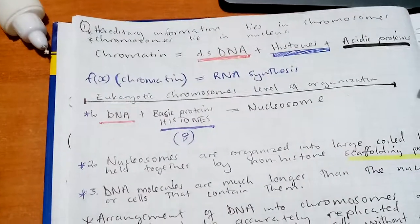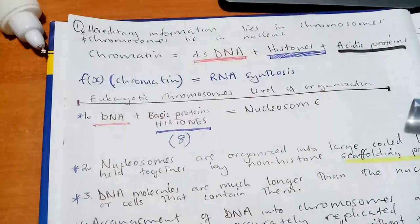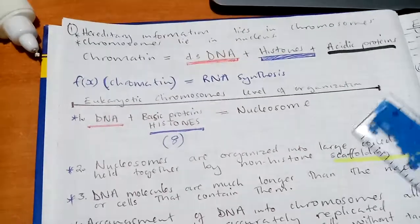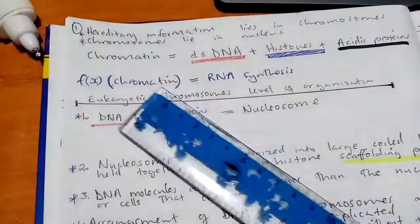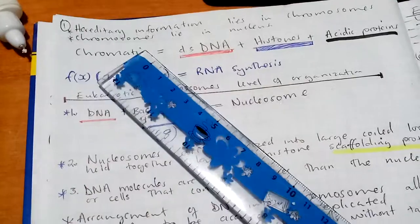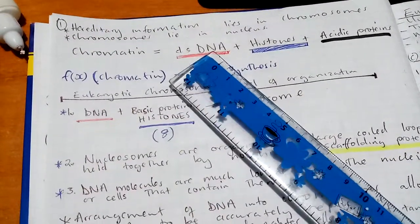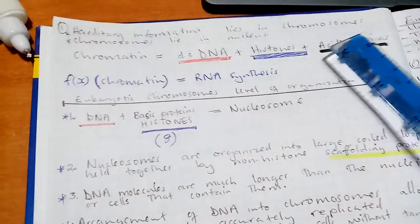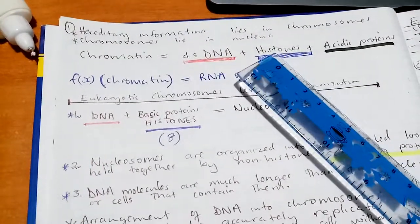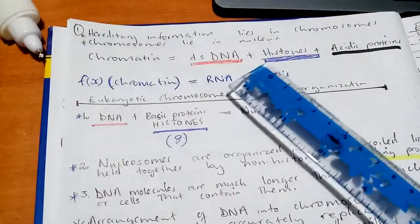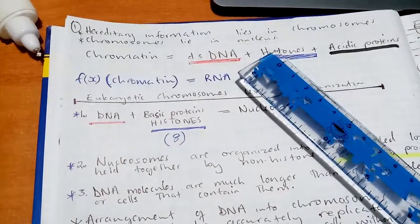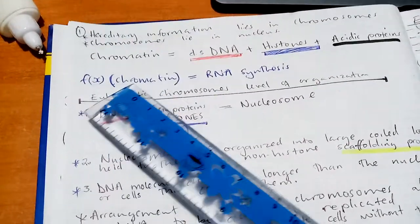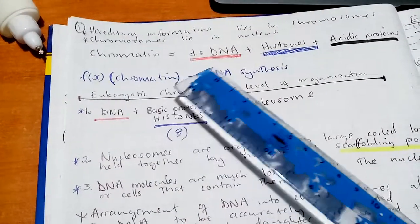The hereditary information lies in chromosomes, and the chromosomes lie in the nucleus. We have a special term here called chromatin. Chromatin is made up of double-stranded DNA plus histones plus acidic proteins. Histones are basic proteins — eight basic proteins. The function of chromatin is RNA synthesis.